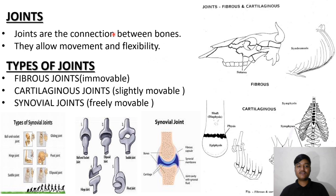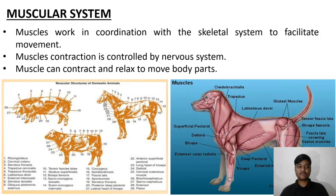Joints are the connections between the bones. They allow movement and flexibility. Types of joints: fibrous joints are immovable, cartilage joints are slightly movable, and synovial joints are freely movable. You can observe the images of synovial joints, fibrous joints, and cartilage joints.